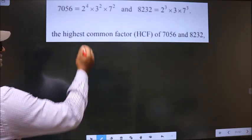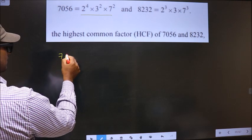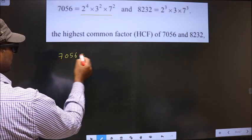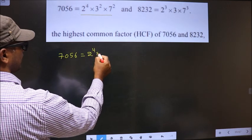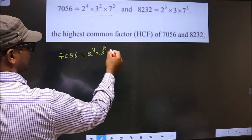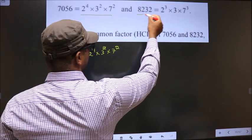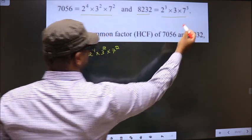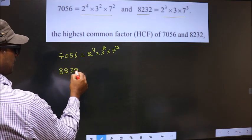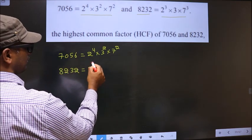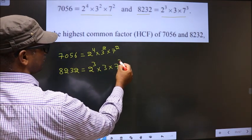7056 equals 2^4 × 3^2 × 7^2, and 8232 equals 2^3 × 3 × 7^3.